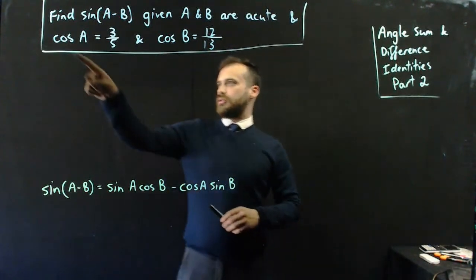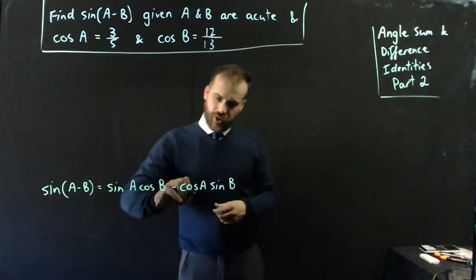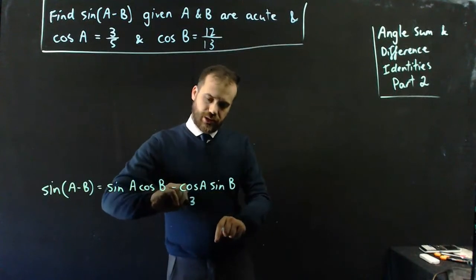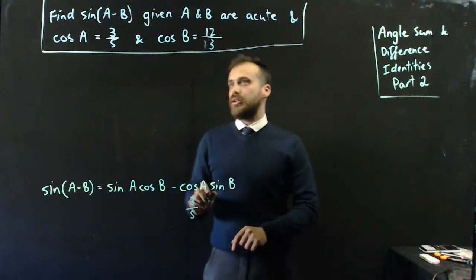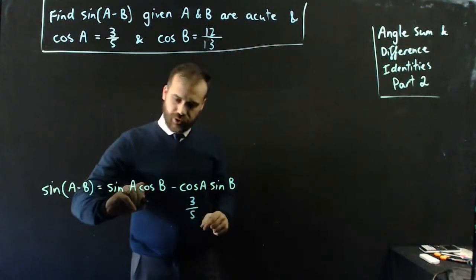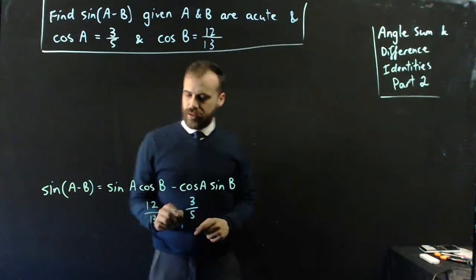Now, what do I know? I know that cos a is 3 on 5. So there's cos a, so that's 3 on 5. And I know that cos b is 12 on 13.